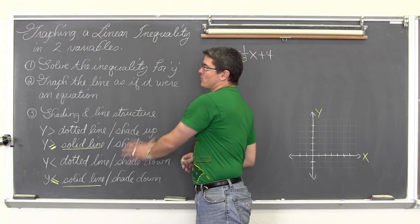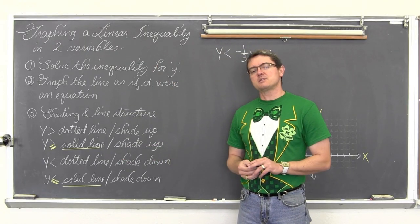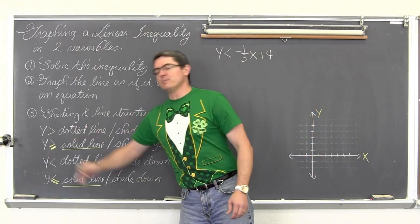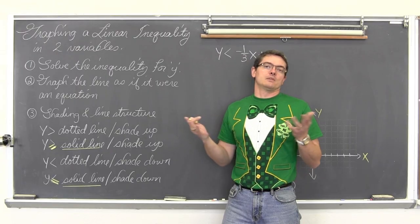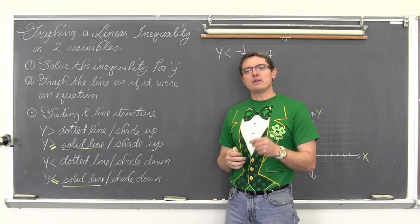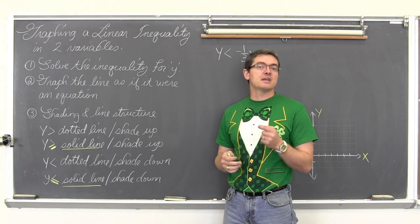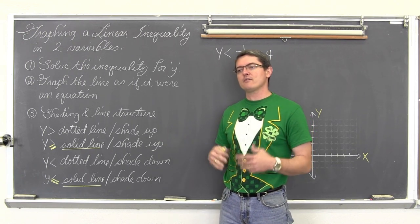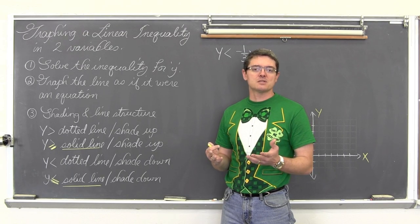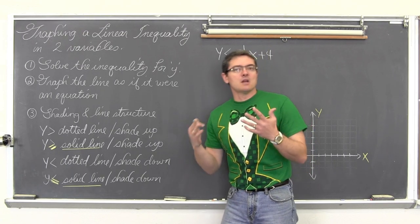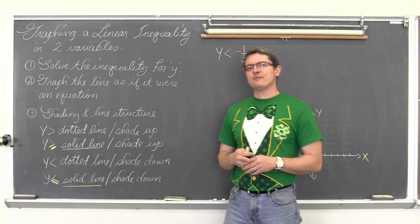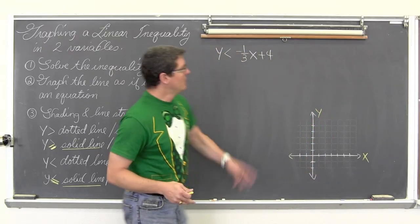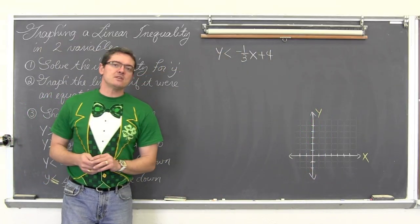There are directions for graphing inequalities that involve not getting the y variable completely isolated. In those cases you just graph the function or equation, and then you determine where to shade based on doing a test point. If it is a linear function, I prefer getting the y value alone first. However, in an upcoming video we are going to be graphing circles, ellipses, or non-linear functions — in those cases you definitely want to use the test point method.